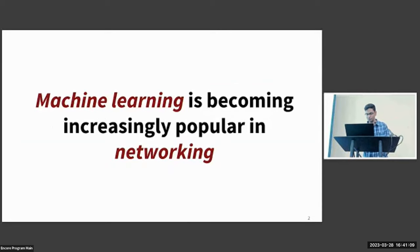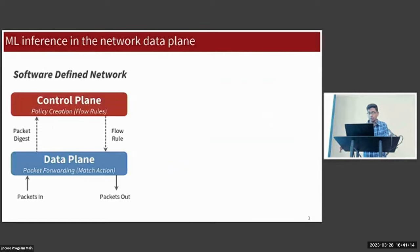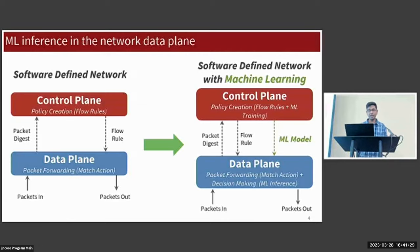For example, a software-defined network or SDN delegates flow rule-based policymaking to the control plane and packet forwarding to the data plane. Here data plane refers to switches and NICs. On the other hand, an ML-based SDN simply adds the option to create policies by training ML models and then installing those models into the data plane to run at line rate.